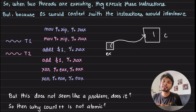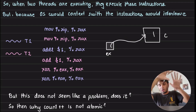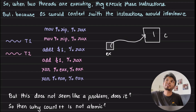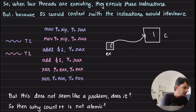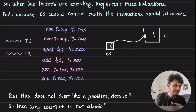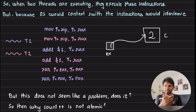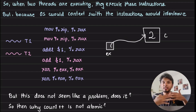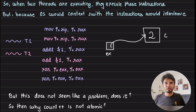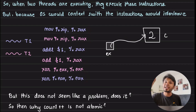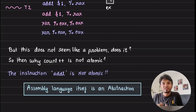Then the other thread comes in and runs addl $1, (%rax) — go to the location pointed by rax and do a plus plus. But if you look carefully, even with this interleaving the final value still appears correct. So then why are we saying count++ is not atomic? This is because we made a vague assumption — that the assembly language code generated is atomic in nature, meaning each of these instructions is atomic. But that's not true, because assembly language itself is an abstraction.